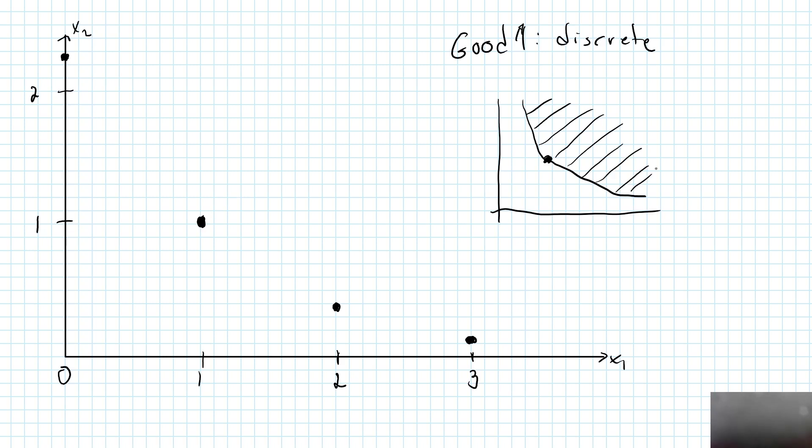So what will the weakly preferred set look like for any of these bundles on the indifference curve? Well, let's focus on this one. From this point I cannot move to the left and I cannot move to the right, since good 1 can only be consumed in integral quantities.